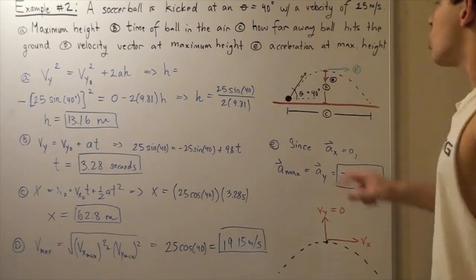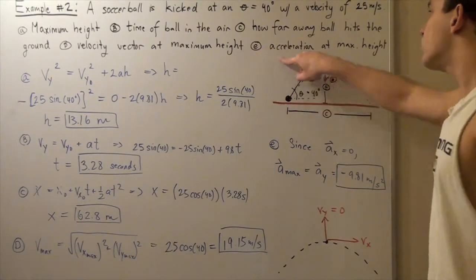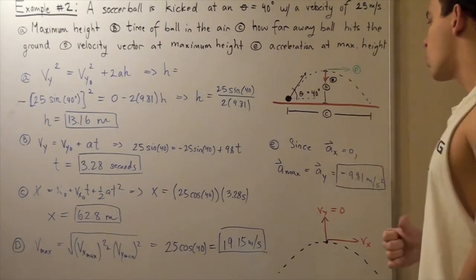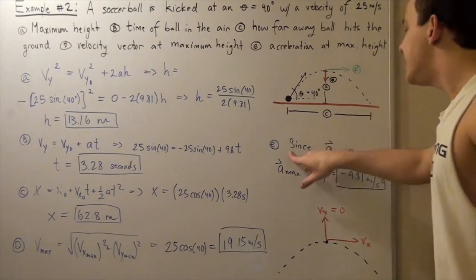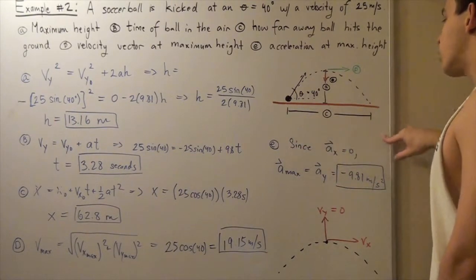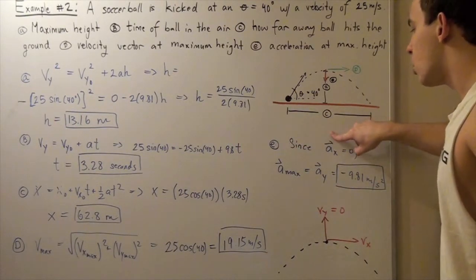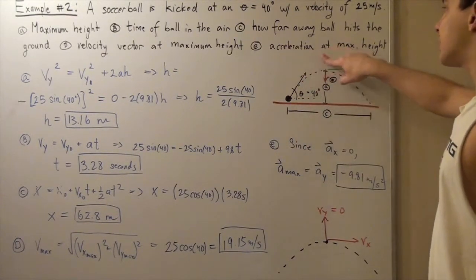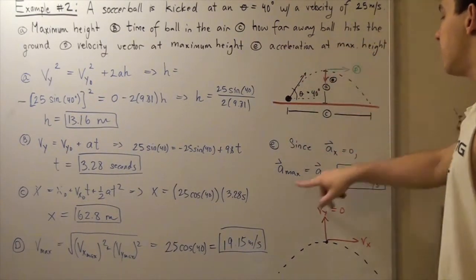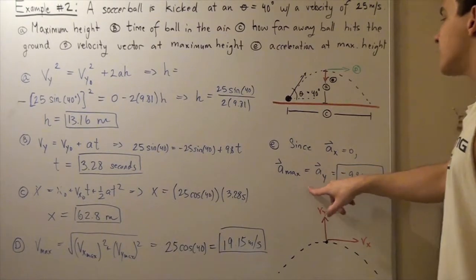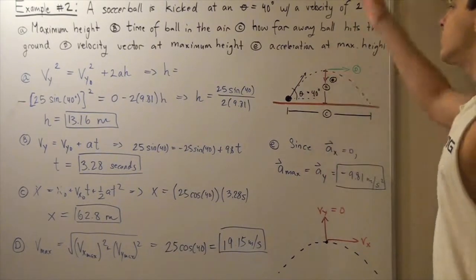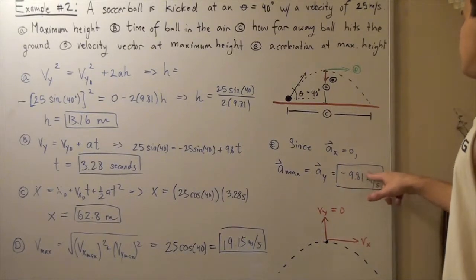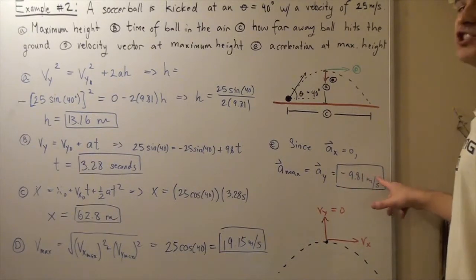For Part E, the acceleration vector at maximum height: since horizontal acceleration is zero, the acceleration vector at maximum height is simply the vertical acceleration — negative 9.81 meters per second squared, directed downward.